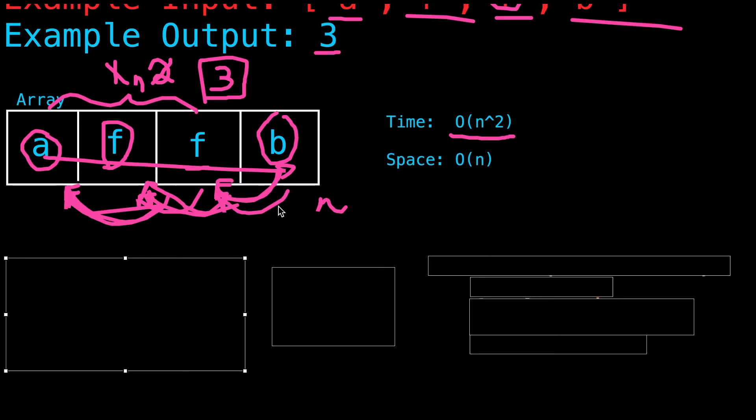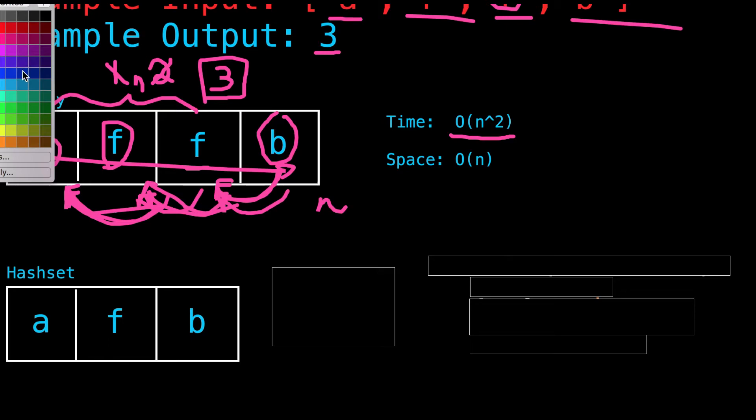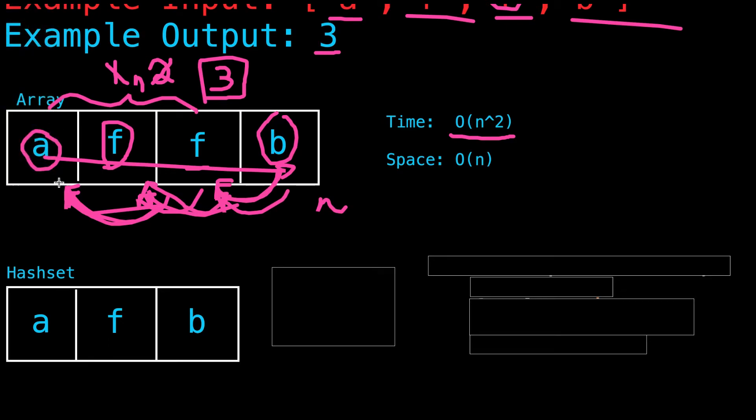Okay, so the answer would be to implement a hash set. The way we can implement a hash set is, with every single element of our array, we can simply add it to a hash set.